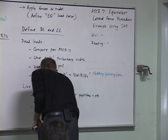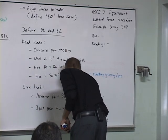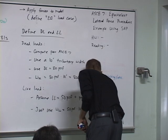So we're just going to use W live load equals 50 PSF times 10 feet equals 500 pounds per foot.